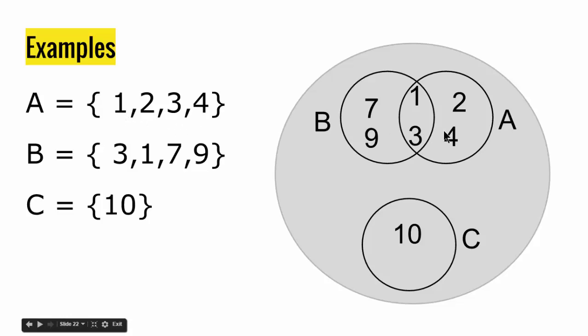But we see that these two sets are sharing a common ground, or they share elements. This is the area where both A and B have common elements, and they have 1 and 3 in common.